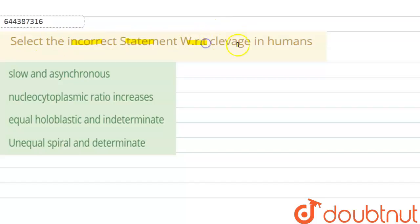...the incorrect statement with respect to cleavage in humans. First one is given: slow and asynchronous, nucleocytoplasmic ratio increases, equal holoblastic and indeterminate, and fourth one is unequal spiral and determinate. So in this question we need to find out which one is incorrect for the cleavage.